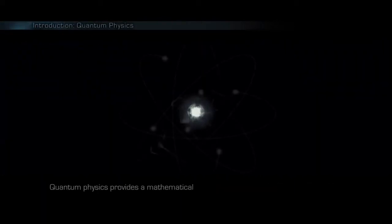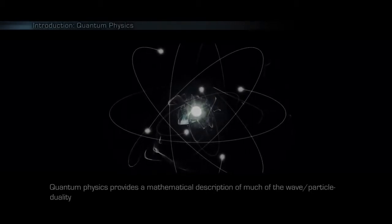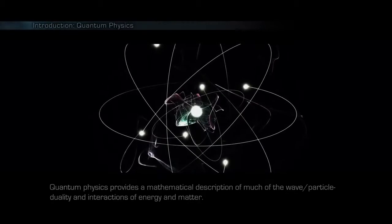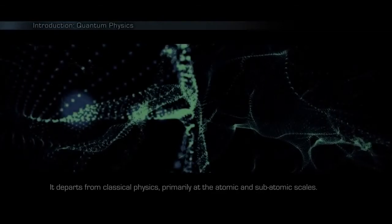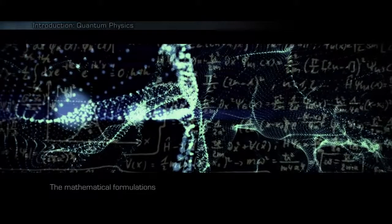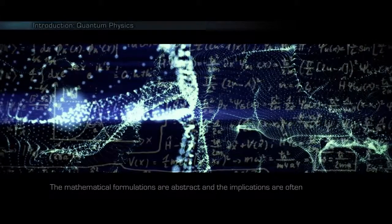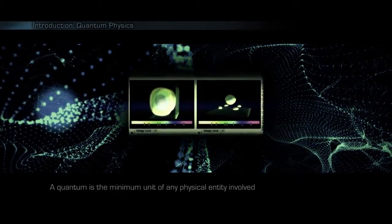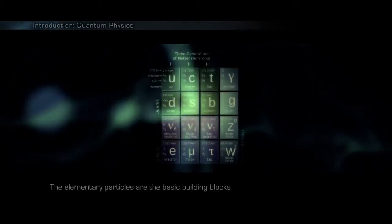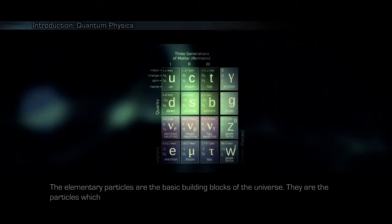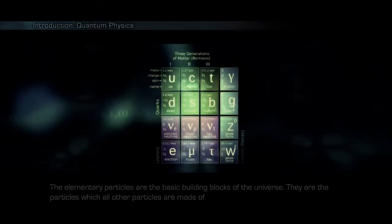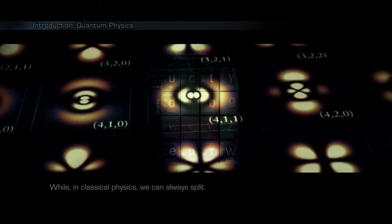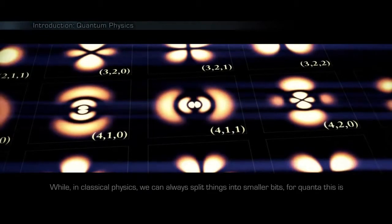Quantum physics provides a mathematical description of much of the wave-particle duality and interactions of energy and matter. It departs from classical physics primarily at the atomic and subatomic scales. The mathematical formulations are abstract and the implications are often non-intuitive. A quantum is the minimum unit of any physical entity involved in an interaction. The elementary particles are the basic building blocks of the universe. They are the particles which all other particles are made of. While in classical physics we can always split things into smaller bits, for quanta this is impossible.